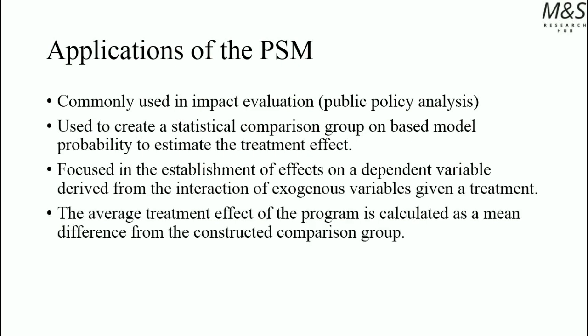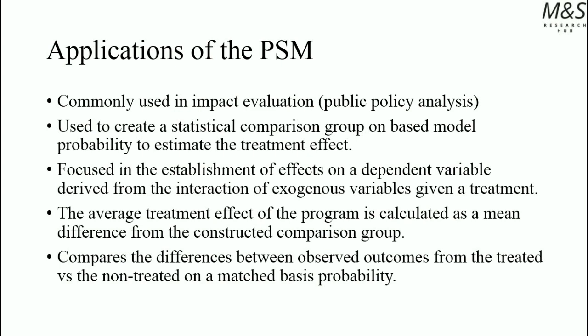The average treatment effect of the program is calculated as a mean difference from the constructed comparison group. It compares the difference between observed outcomes from the treated versus the non-treated on a matched basis probability. The propensity score matching uses probability as the main basis, since it constructs a comparison group based on a model and covariates.